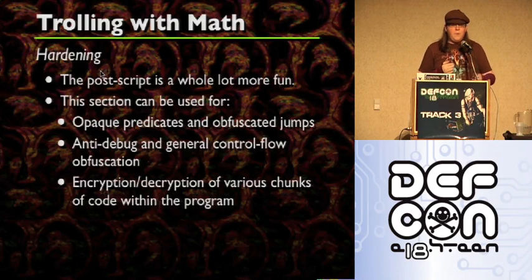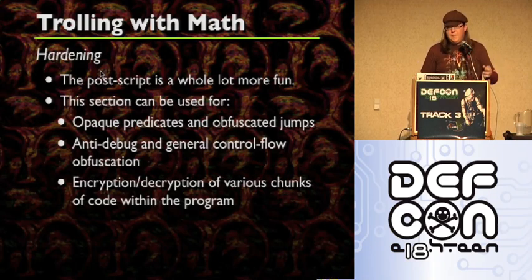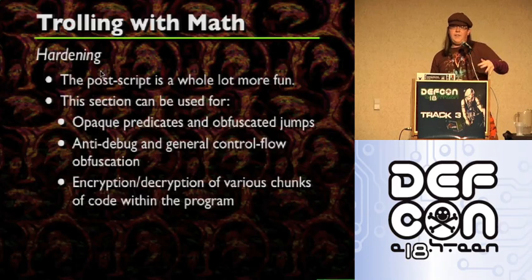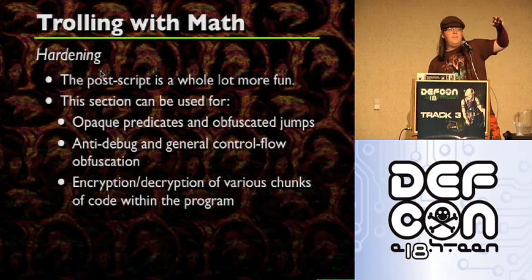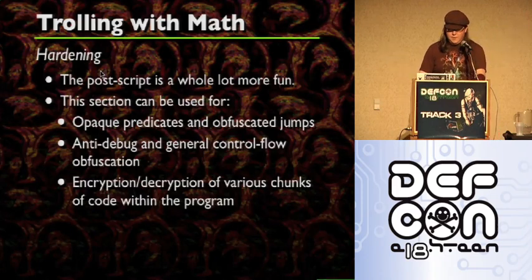So what can this postscript section be used for? You can put opaque predicates and obfuscated jumps to link to the very next section. Anti-debug you can also stick in here too — general code flow obfuscation, that sort of stuff. Encryption — one of the things I think is really cool, and I'm actually working on it right now, is being able to encrypt and decrypt every single instruction so that as every instruction is executed, it decrypts the next section and decrypts the next section. Oh by the way, here's a bunch of anti-debug in the preamble — you don't get the rest of the code. There's all sorts of other stuff you can do with that too.